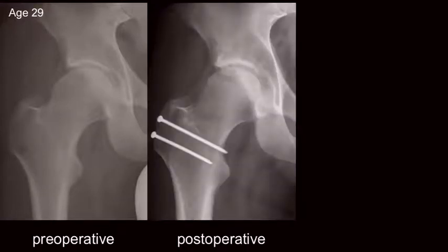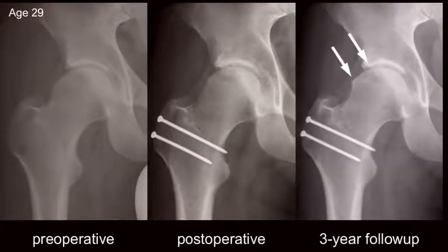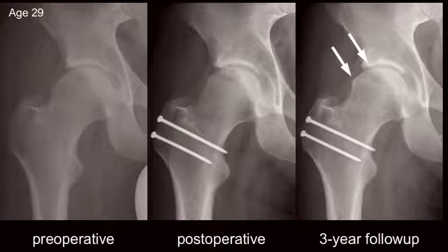This was the postoperative correction, which we thought was adequate regarding the cam resection, in particular on the anterior superior and lateral portion of the femoral head. But surprisingly, at the three-year follow-up, this patient did not do well. There was some joint space narrowing on the lateral side and some osteophyte formation at the lateral portion of the femoral neck.